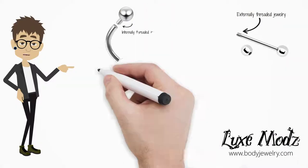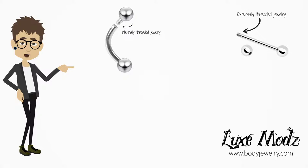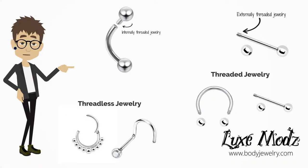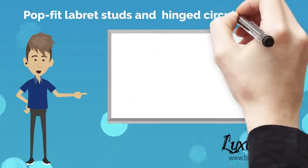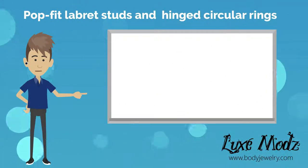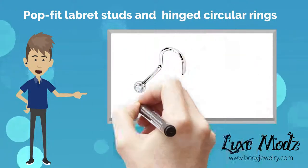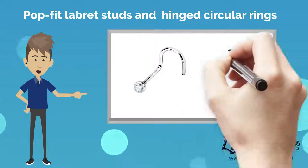Internal and External Threaded Body Jewelry. Fundamentally, body jewelry comes in two forms: threaded and unthreaded. Unthreaded body jewelry are those devoid of a secondary decorative piece that needs to be fastened to the jewelry shaft. They usually come in one piece. Examples include pop-fit elaborate studs and hinged circular rings.